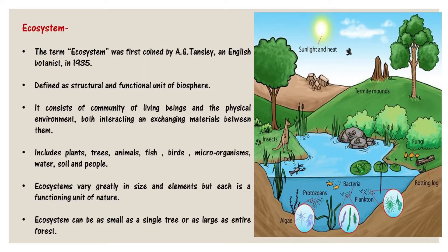Let us understand the term ecosystem. It was first coined by E.G. Tansley, who was an English botanist, in 1935. It is defined as a structural and functional unit of the biosphere — any part of the environment — an open system that can be living plus non-living, biotic or abiotic. Examples like aquarium and forest: a functional unit of environment which consists of a community of living beings and a physical environment which interact and exchange materials between them, including plants, trees, animals, fish, birds, microorganisms, water, soil, and people.